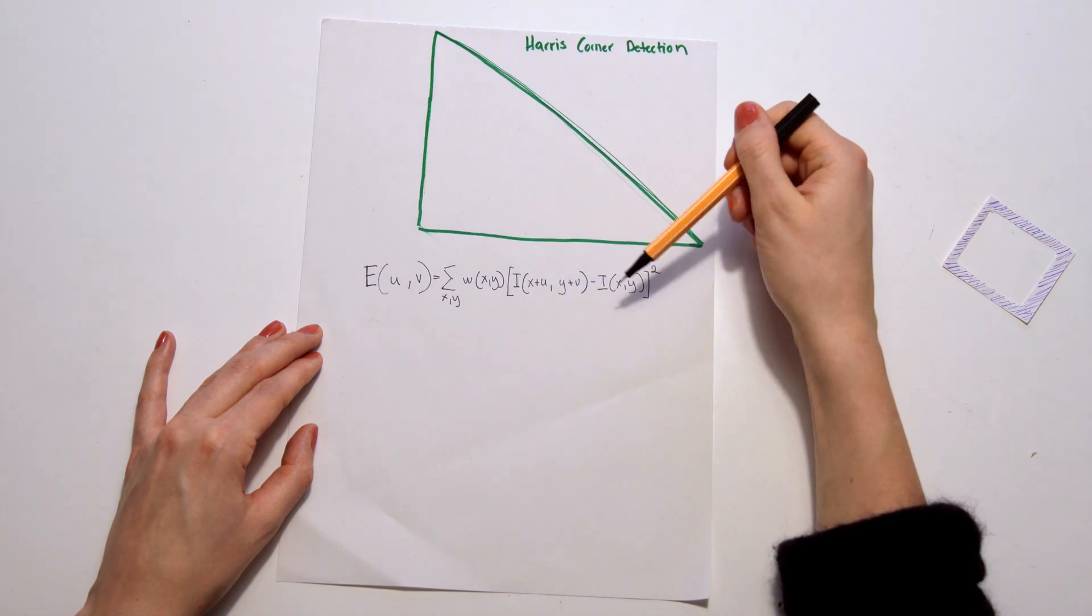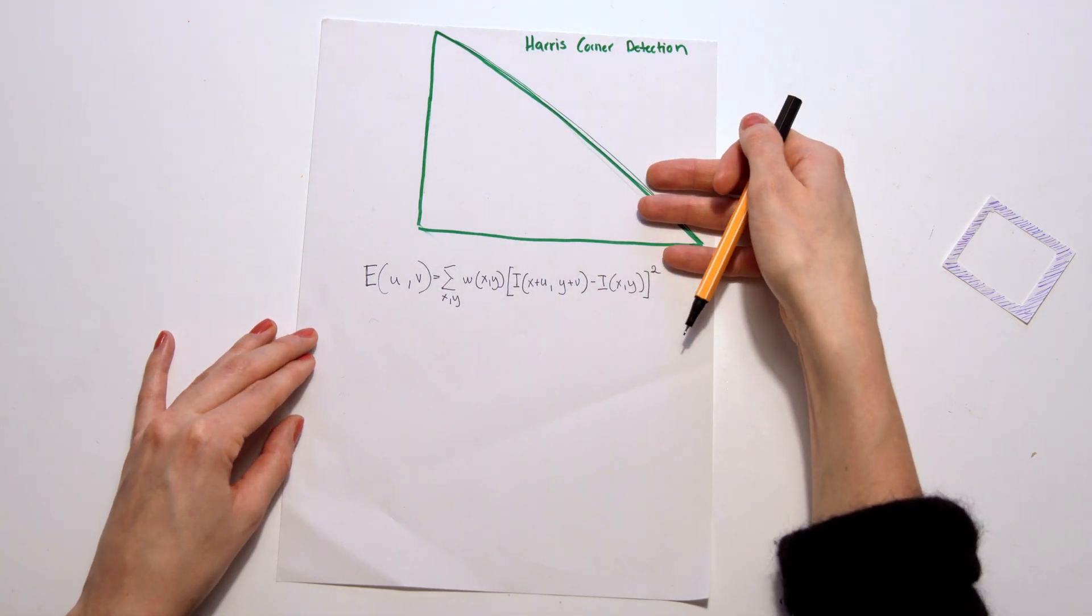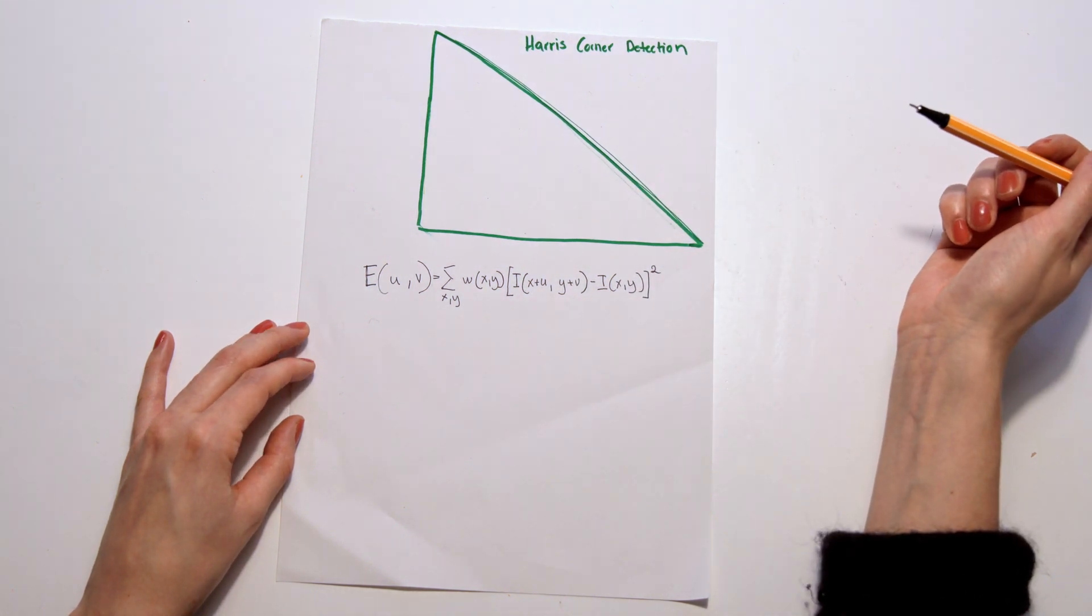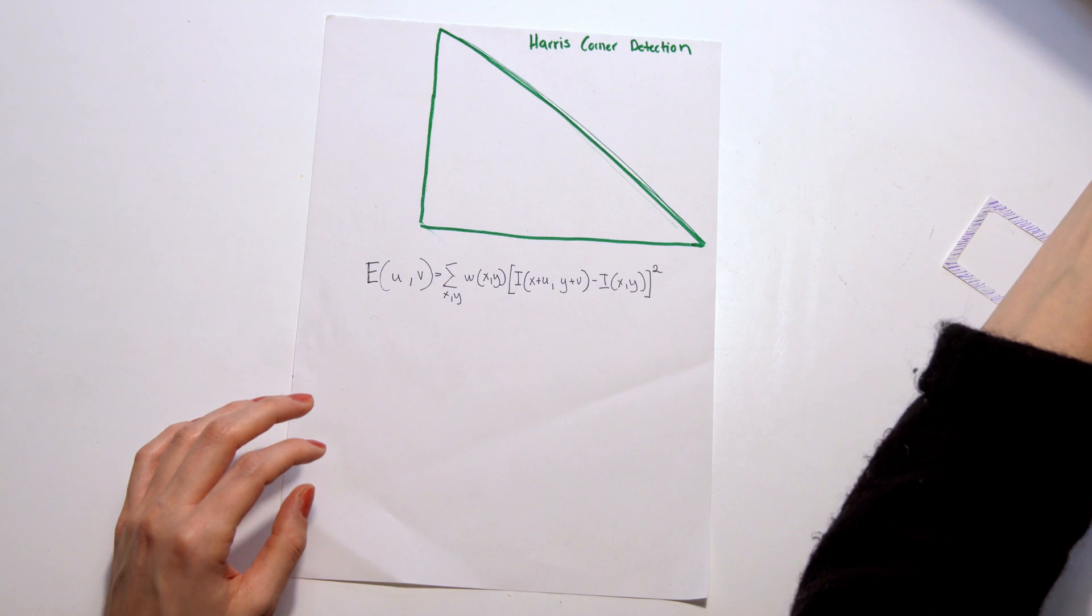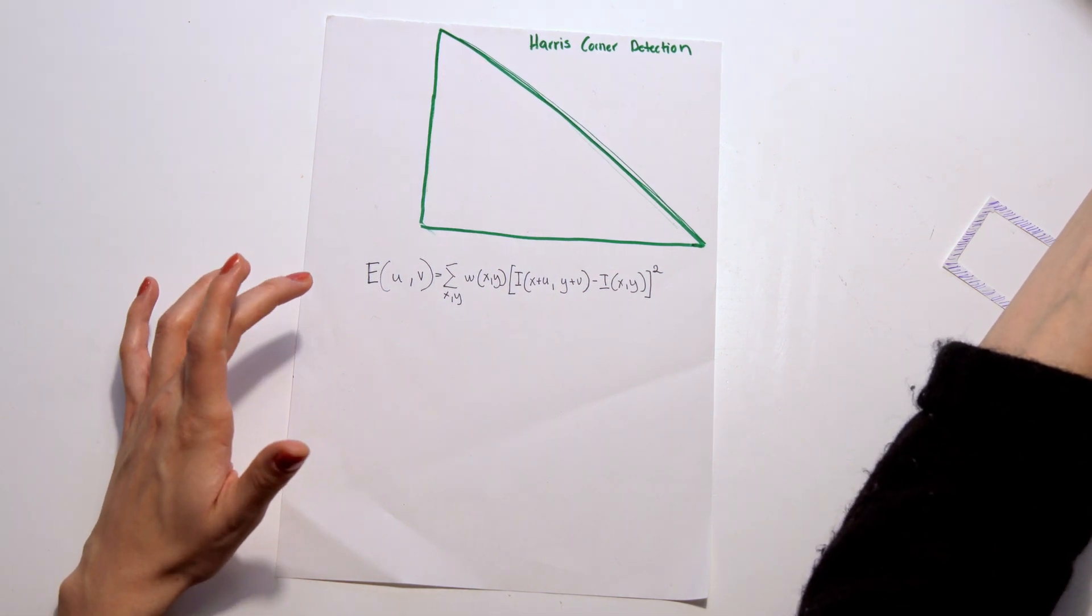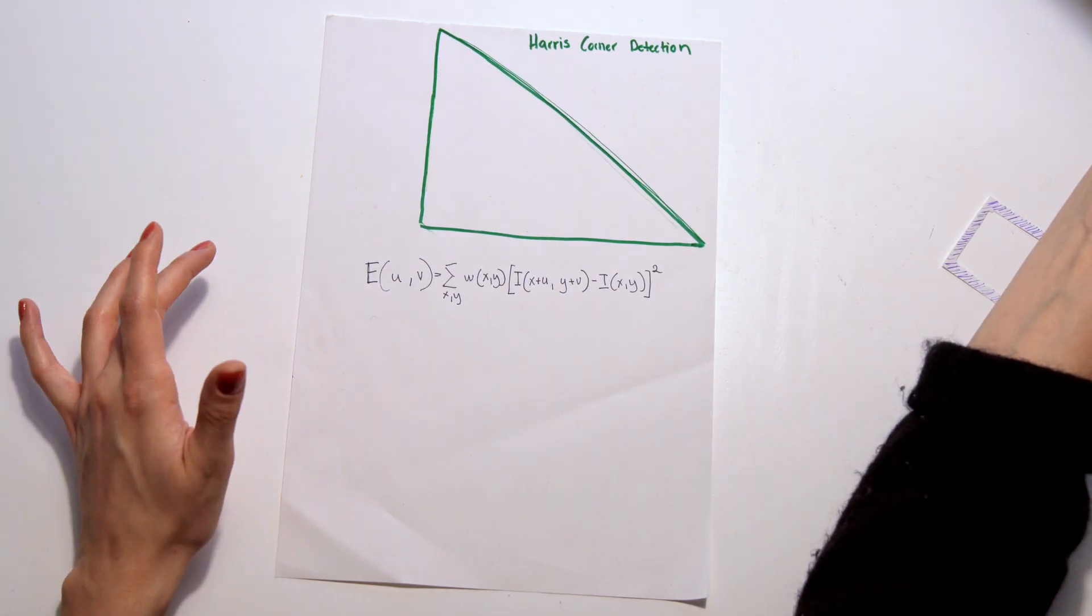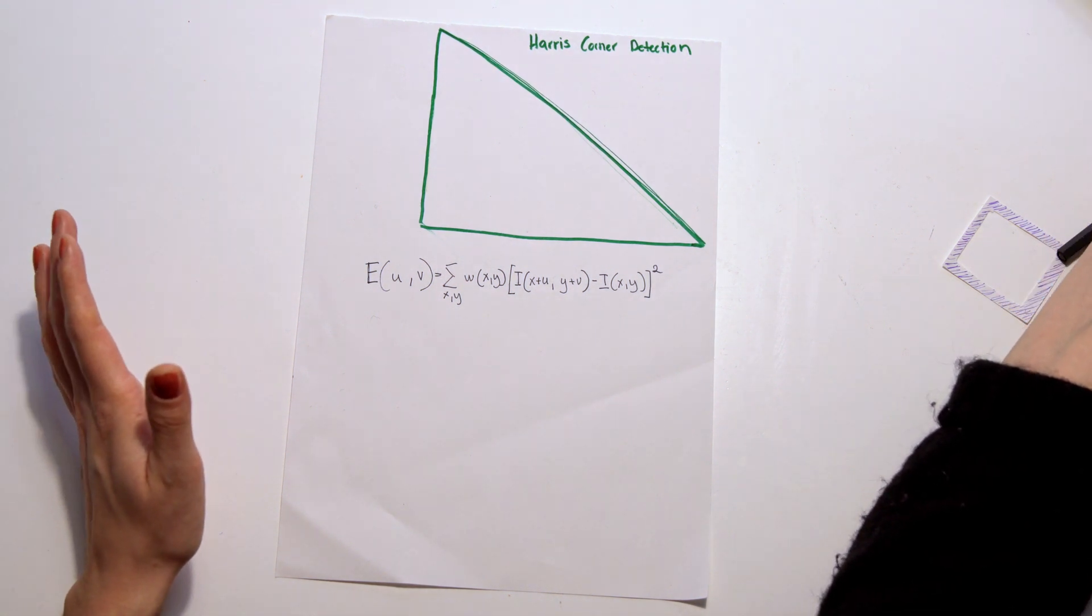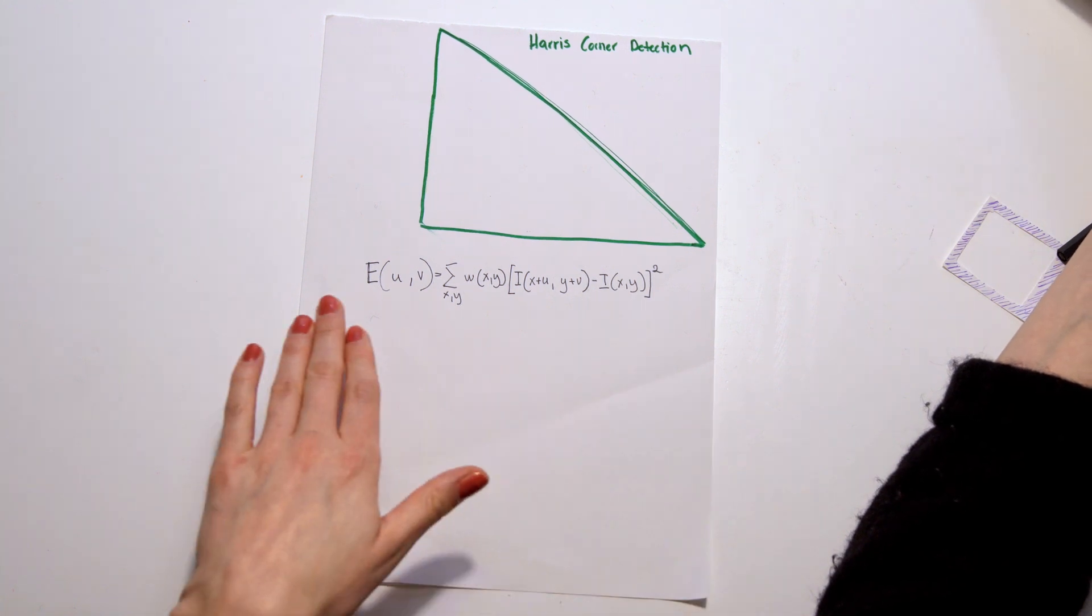So the intensity, you see the difference here. And you use the window function to move that window around basically. However, this equation will be really time consuming to calculate.